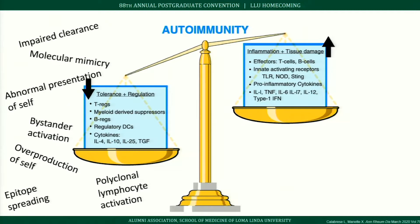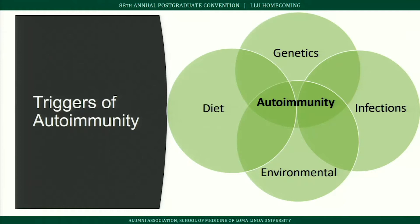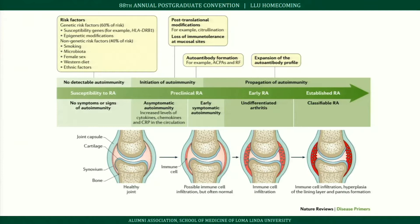Triggers of autoimmunity can be grouped into four categories: genetics, diet, infections, and environmental triggers. Using rheumatoid arthritis as an example: on the far left is an individual susceptible to RA; on the far right is established RA with a diseased joint showing immune cell infiltration, hyperplasia, and pannus formation — the very swollen joint caused by synovial hypertrophy.